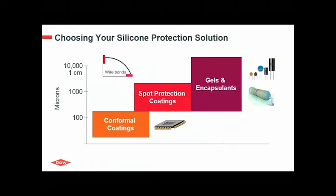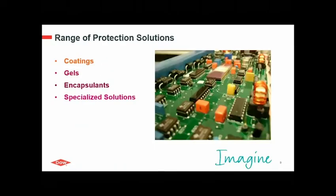This graph shows you which material to choose for your application. If you have a very flat board design requiring only a very thin protecting layer, you may choose a conformal coating. If you have taller components on your board, this may require a spot protection coating — these materials have an increased viscosity compared to conformal coatings and can build up higher to better protect taller components. And if you have a very complex landscape of components with different sizes, you may want to choose a gel or encapsulant to pot the whole module. We will now have a closer look into the range of DOWSIL protection solutions, starting with coatings.